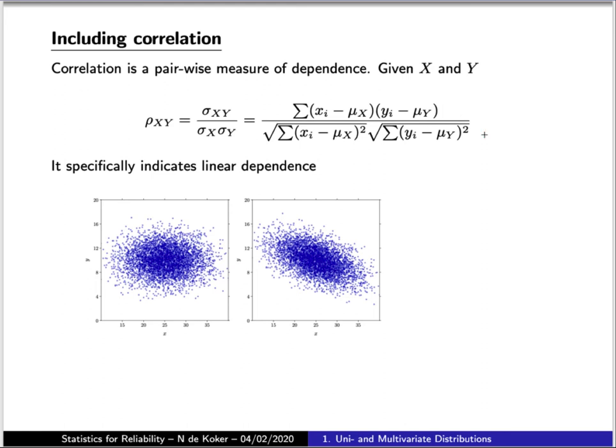So to illustrate the effect of this, on the left here we have a random sample of two normally distributed variables that are uncorrelated and in the middle here we have two variables with the same marginal parameter but now there is a negative correlation present between the two variables.